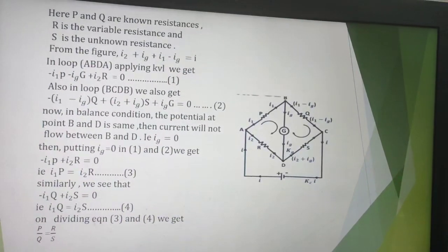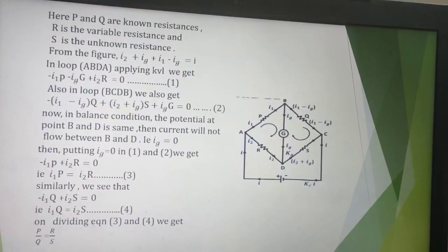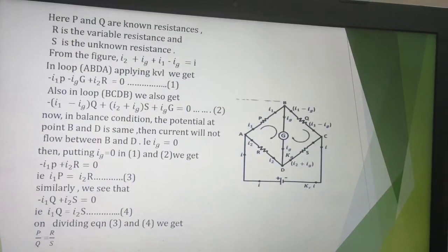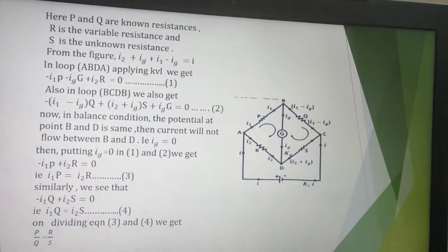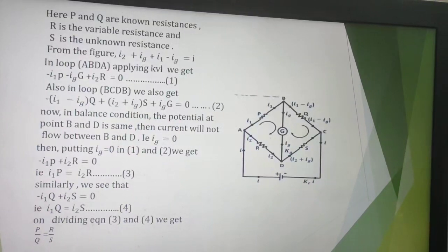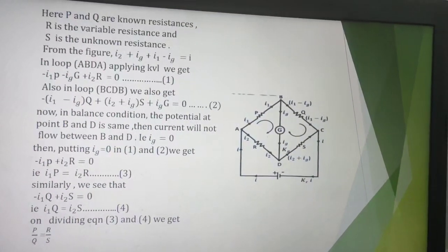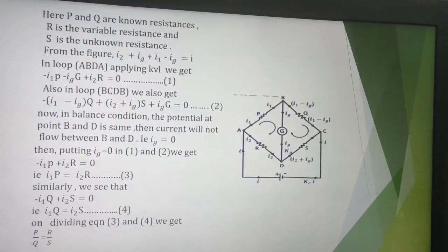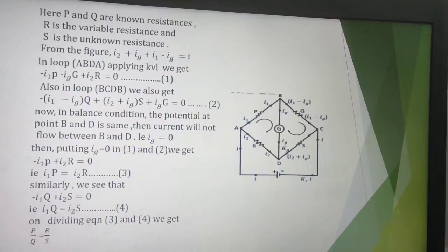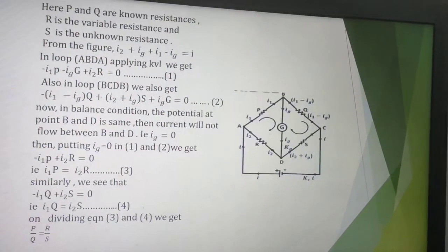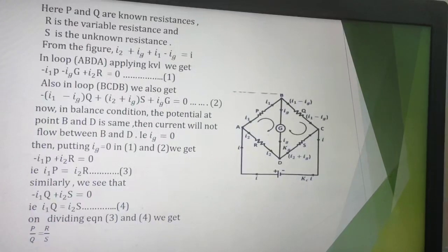Now from the figure, I2 + IG + I1 - IG = I, cancelling both the IG terms. From here we see that the sum of incoming current is equal to the sum of outgoing current which is I. Hence Kirchhoff's current law is satisfied.